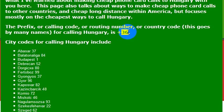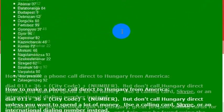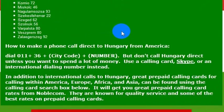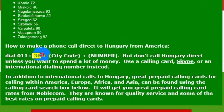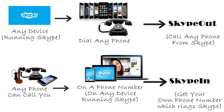The country code for calling Hungary is 36. To make a phone call to Hungary, you would dial 011, which is the international dialing code, then you would dial 36, the country code for Hungary.